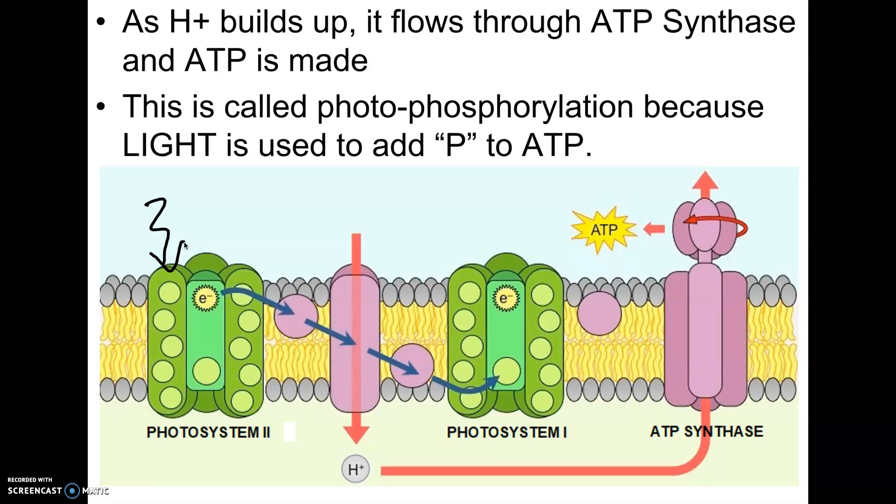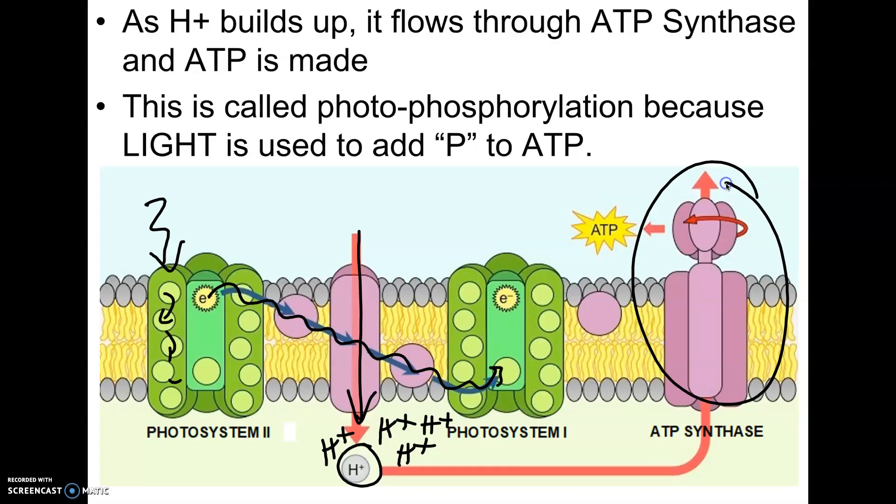So here's the light hits here. The electrons pass the energy along. This electron gets so excited, it goes down an electron transport chain. And that's powering this pump. That's pumping all this hydrogen here into this space. This is the pump. This is the enzyme that actually makes the ATP.